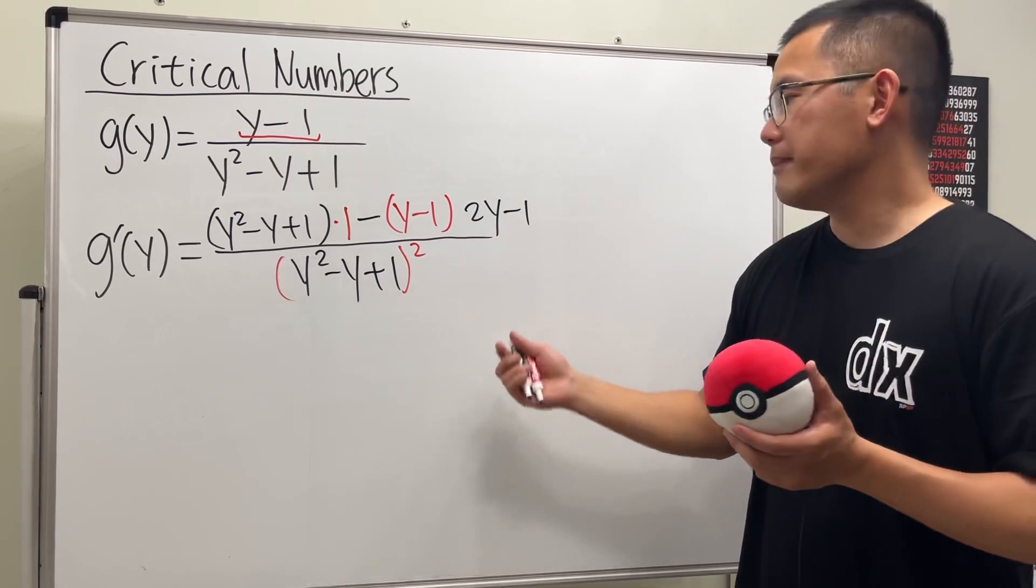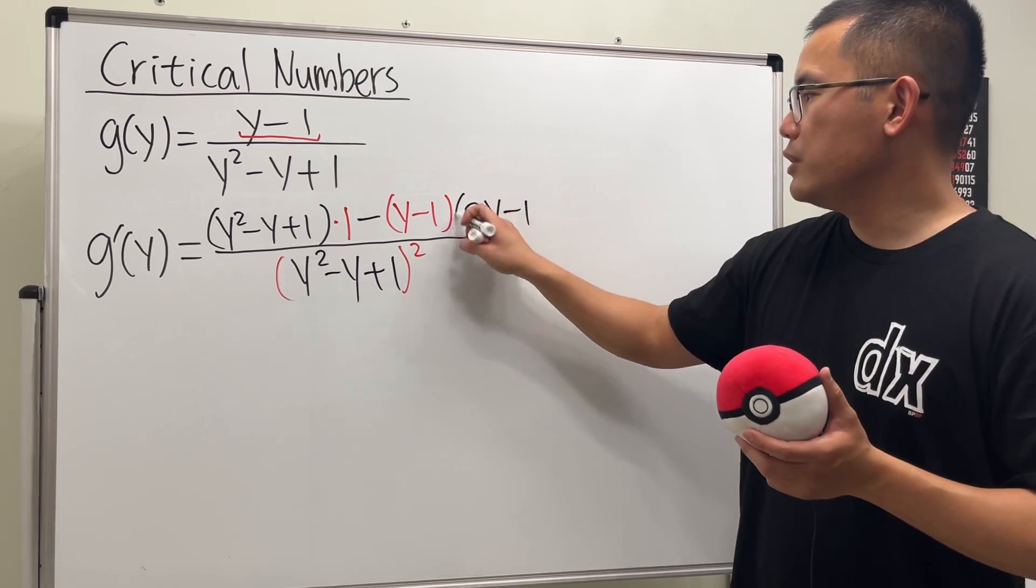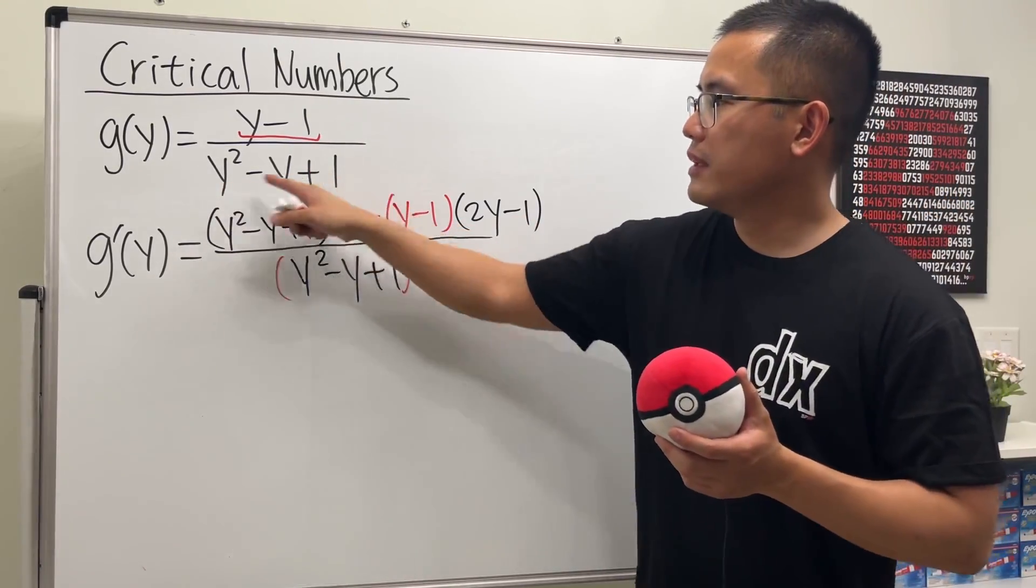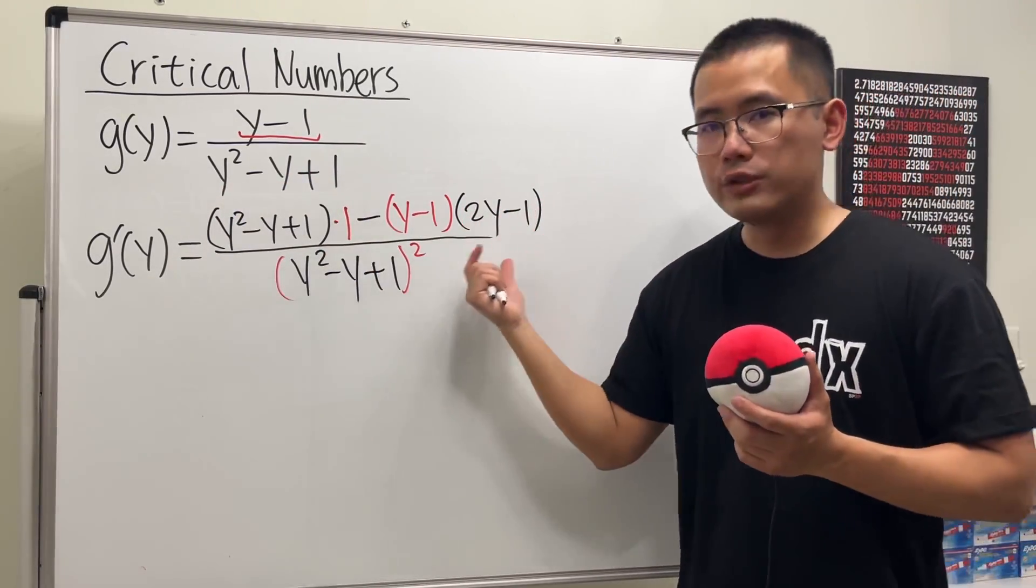And then keep in mind, this right here has two terms, so be sure to use the parentheses. The derivative of this has two terms, so be sure to use the parentheses.